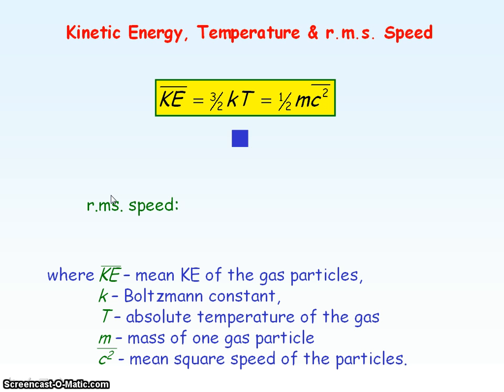So the root mean square speed is directly proportional to the square root of the absolute temperature.